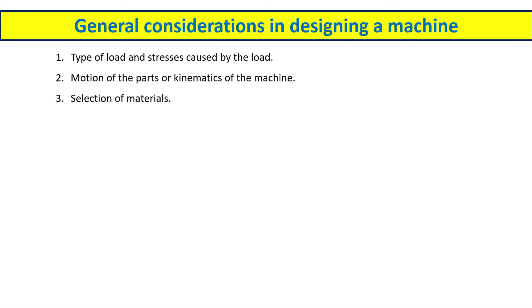The third one is the selection of material, which plays a very important role. Material selection depends on which type of process we are using and where the part is functioning. This is a very vast area where we need expertise to select the proper material. Generally, while designing a part, we take the previous reference of a similar component.